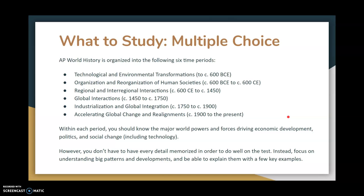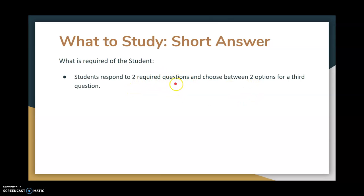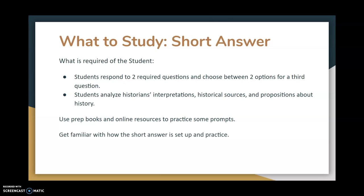The short answer requires you to do three questions. Two of them are given to you and the third is a choice between two questions. You'll basically analyze historians' interpretations, historical sources, and propositions about history, then create an answer based on what the question asks. You can use prep books and online resources to practice these prompts — they're really helpful for understanding what the short answer asks for and what strategies to use.